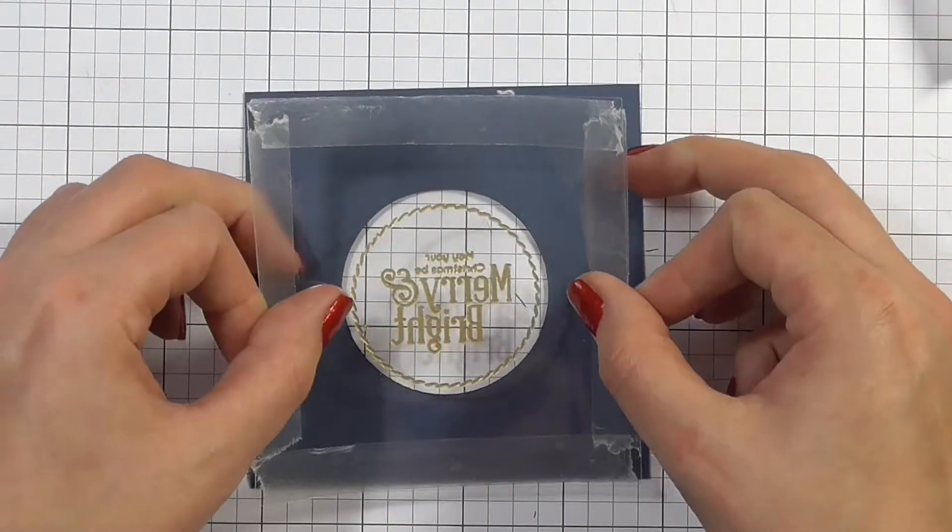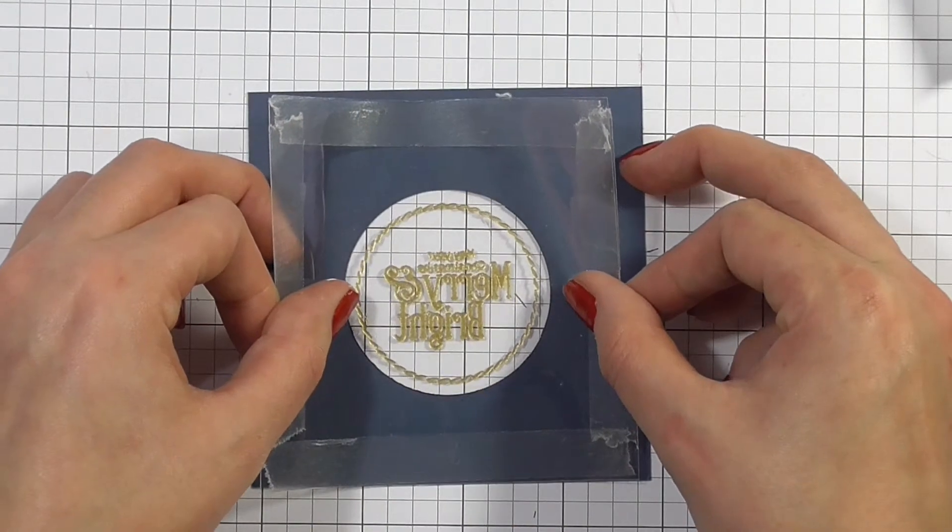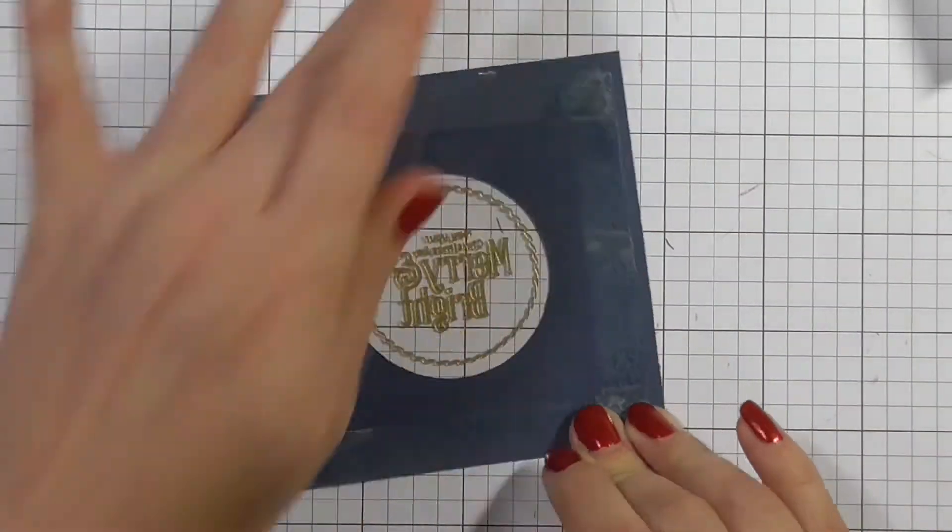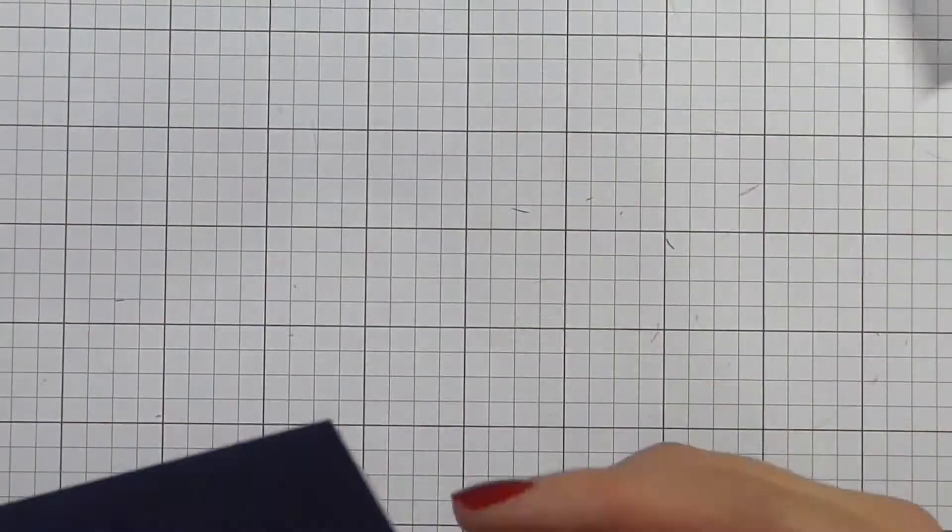So I'm using some double-sided sticky tape to stick this down to the front panel, and then I can start building up a well for my shaker material.